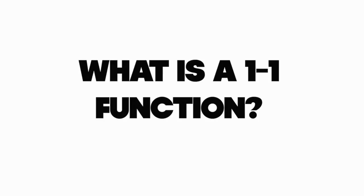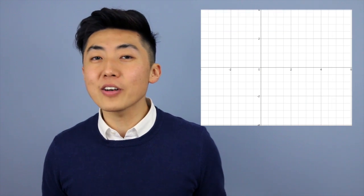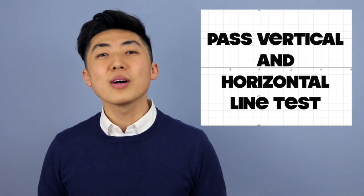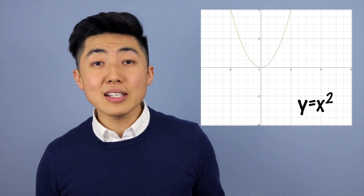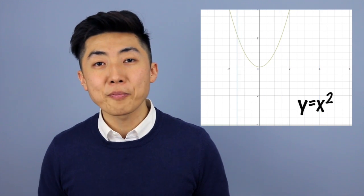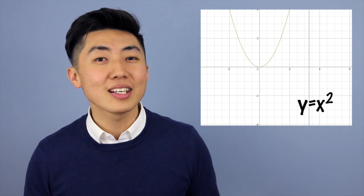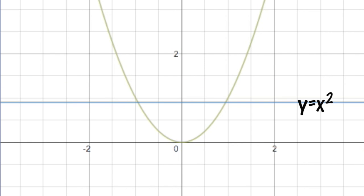The next thing we're going to discuss is a one-to-one function. A one-to-one function says that for any given value of x we get only one value of y, and for any given value of y we get only one value of x. So a one-to-one function is any function that passes both the vertical line test and a horizontal line test. For example, y equals x squared passes the vertical line test, but if we draw a horizontal line we pass through it twice — so it is a function but not a one-to-one function.